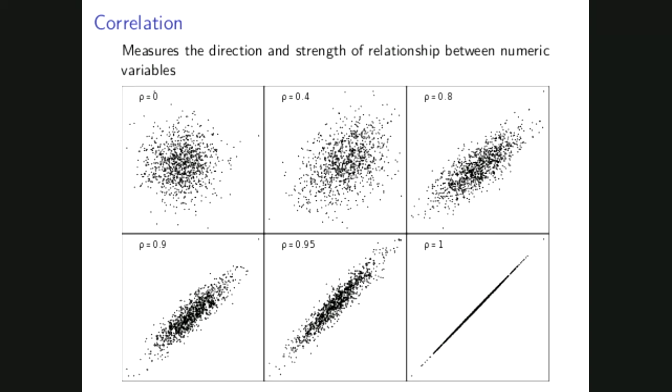As we move along to the right, we see that the correlation gets stronger and stronger, and eventually in the bottom right panel, we have a correlation of 1. A correlation of 1 is the strongest positive correlation that you can experience.